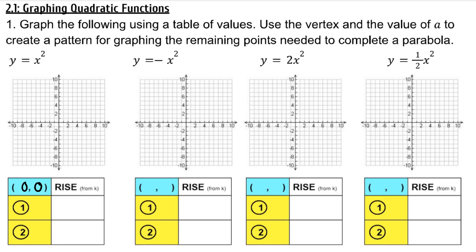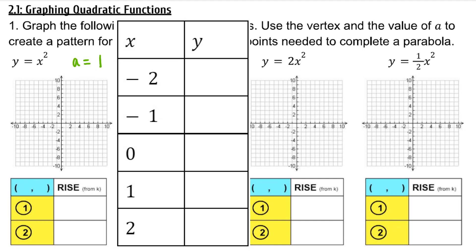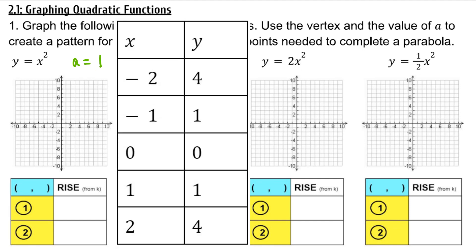a is the coefficient of x squared, so a is 1. If I plug in -2, -1, 0, 1, and 2 for y equals x squared, I get the points (-2, 4), (-1, 1), (0, 0), (1, 1), and (2, 4).